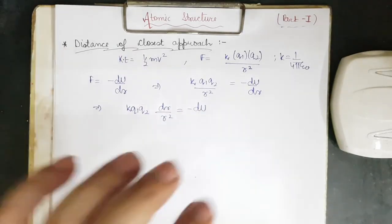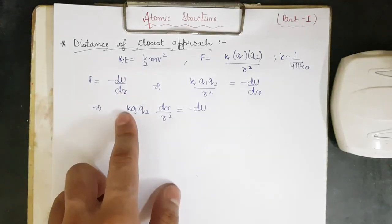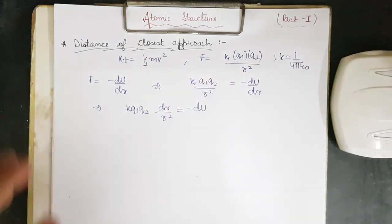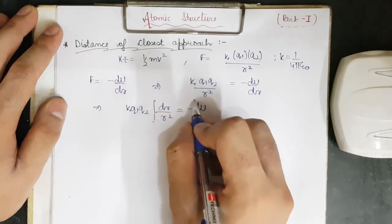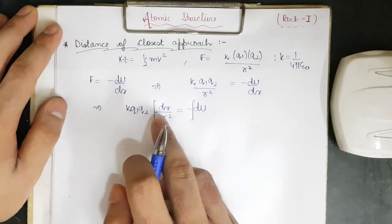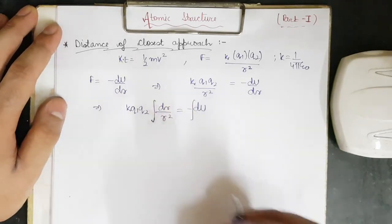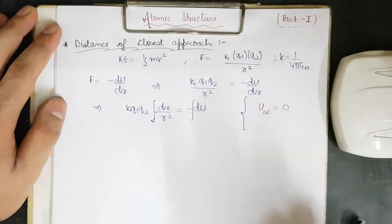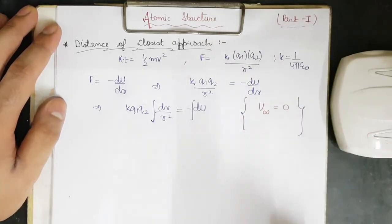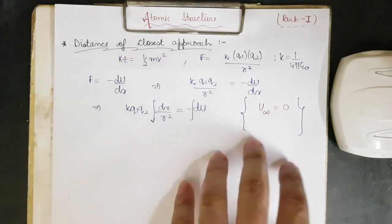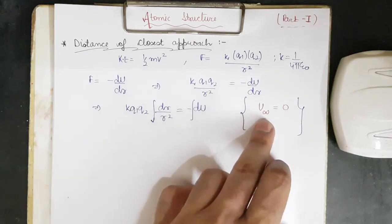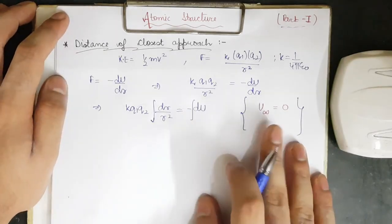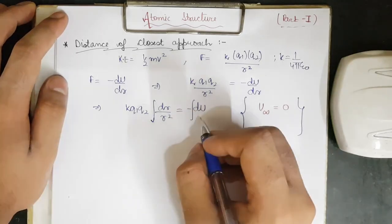Now we integrate both sides. Note that k, q1, and q2 are all constants, so they can be taken outside the integral. Before integrating, remember an important assumption in electrostatics: the potential energy at infinity is assumed to be equal to zero. This is what is assumed while solving potential energy questions. It could also be given as some nonzero value — for example, two or three units — but here we take U at infinity to be zero.